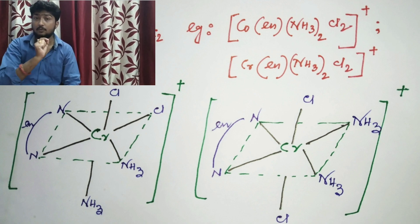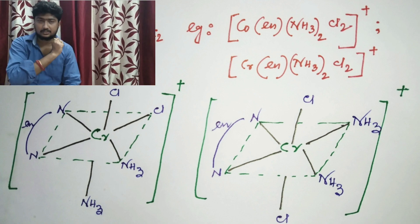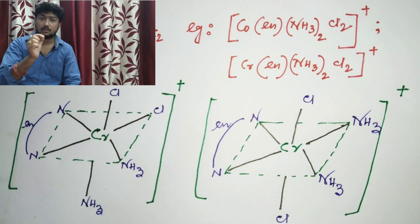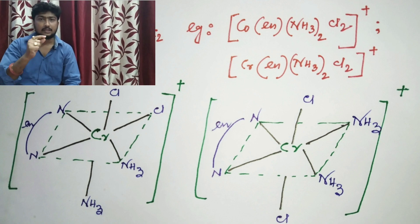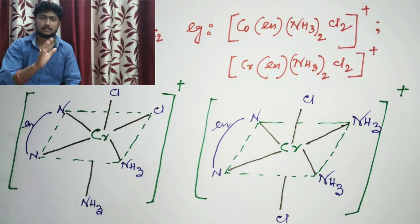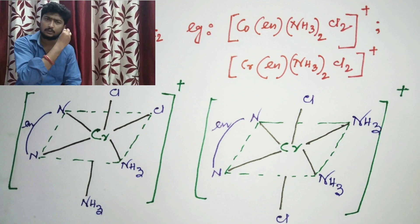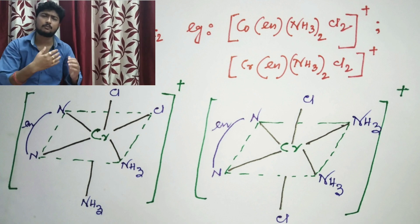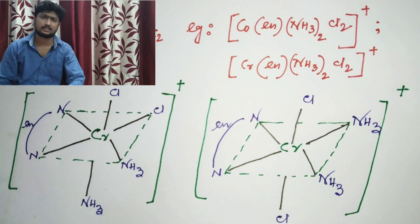In the cis case, if you write Cl and Cl not beside each other but one position later, it will also exist as a cis isomer. If you write NH3 opposite to NH3, then it will be a trans isomer. So you can write one structure as cis and another as trans, as shown in these examples.